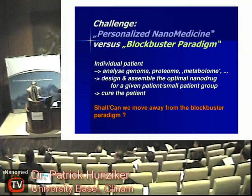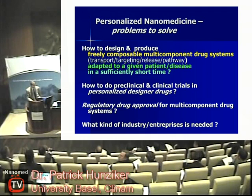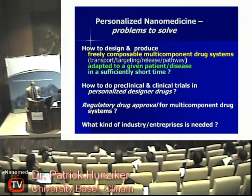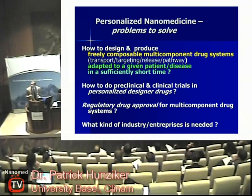This is a huge challenge for various reasons. How can we design and produce freely composable multicomponent drug systems which separate transport, targeting, release, and biological pathway targeting? How can we adapt this to a given patient or disease in a sufficiently short time? How can we conduct preclinical and clinical trials for such personalized designer drugs? How can we get regulatory drug approval for such multicomponent drug systems, and what kind of industries and enterprises are needed to achieve this new paradigm?